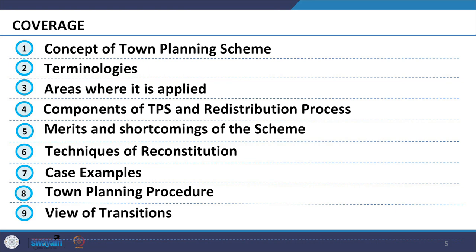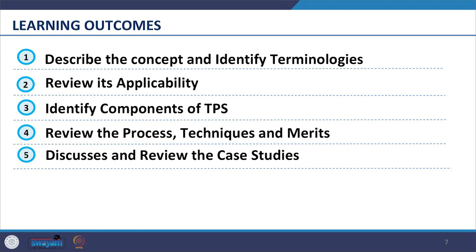The coverage of this section will include the concept of Town Planning Scheme, terminologies involved, areas where it is applied, components of Town Planning Scheme and redistribution process, merits and shortcomings of the scheme, techniques of reconstitution, case examples, Town Planning Procedure, and transitions which have taken place on ground. The learning outcomes are: you should be able to describe the concept and identify terminologies, review its applicability, identify components of Town Planning Scheme, review the process, techniques and merits, and discuss and review the case studies.